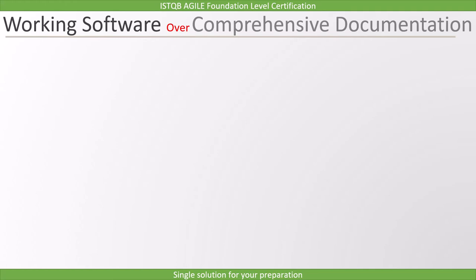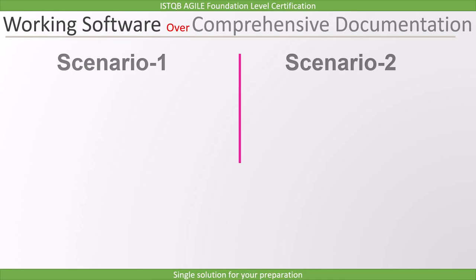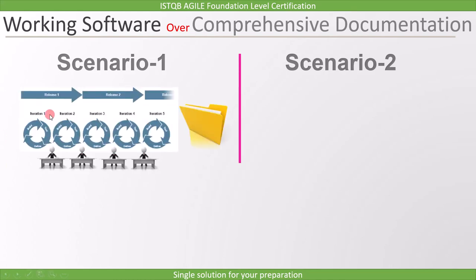The second statement is: working software over comprehensive documentation. To understand this, we will again consider two scenarios. In scenario one, after iteration one you implemented two features out of 15 and they are working. Along with that you have a few documents which you send to the customer. After the second iteration you implemented four more features, so in total six features are working, and again you send it to the customer for feedback with the minimum required documents.